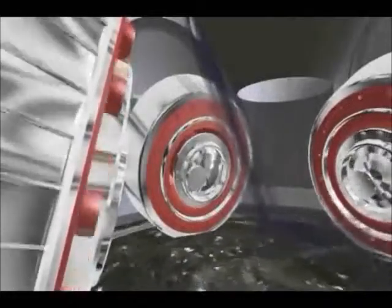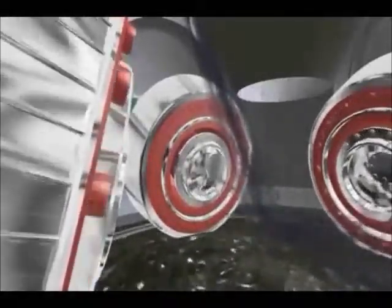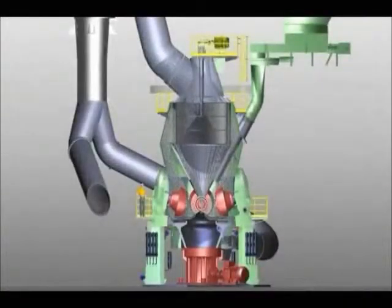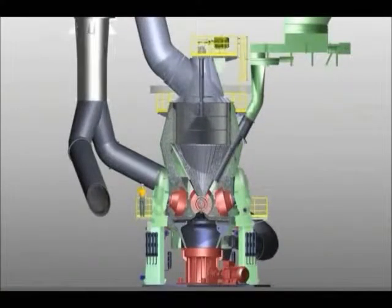The grinding rollers roll over the coal which is comminuted by the force of the hydropneumatic roller spring system. The rotation of the grinding table throws the coal outwards to the area of the louvre ring which surrounds the table, where it is dried by hot gases.